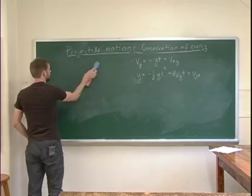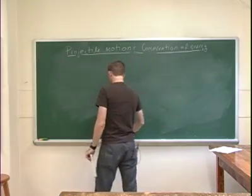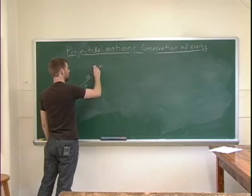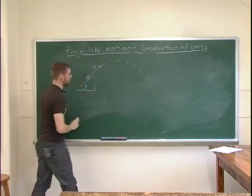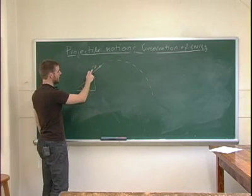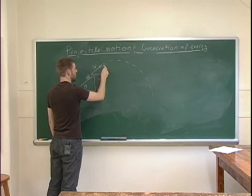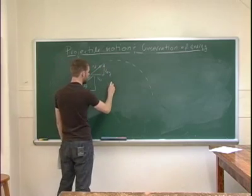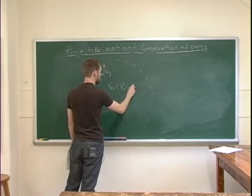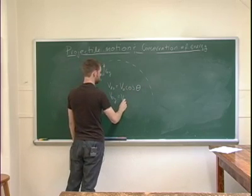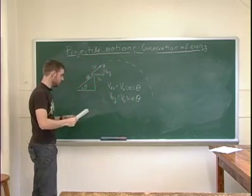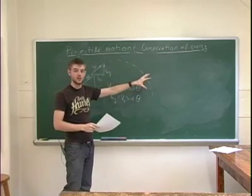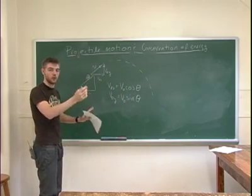In our experiment, a particle flies off an incline at some speed v at angle theta. Instead of measuring v₀_x and v₀_y separately, we can determine them from v and theta alone. From the triangle: v₀_x = v·cos(θ) and v₀_y = v·sin(θ). By measuring v and the angle, we can determine both components and use them in our projectile motion equations to find the ball's position at any future time.